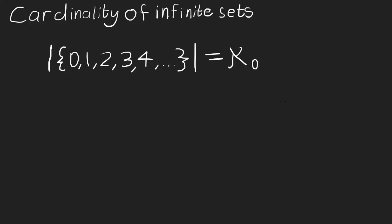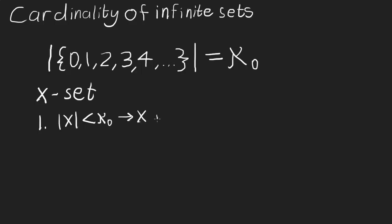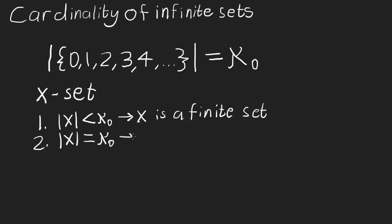For now, we'll talk about three different ways of classifying the cardinality of a set. Let's say that x is some set. We have three cases. First, if the cardinality of x is less than aleph naught, then we say that x is a finite set. Second, if the cardinality of x is the same as aleph naught, then we say that x is a countably infinite set.